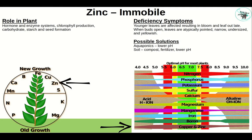Last but not least, zinc is an immobile micronutrient used in hormones, enzyme systems, chlorophyll production, carbohydrates, starch, and seed formation. Because it's immobile, you'll see it in the new growth first. Young leaves are affected, resulting in late bloom and leaf out. When buds open, leaves are atypically pointed, narrow, undersized, and yellowish. In aquaponics: lower the pH. In soil: compost, fertilizer, lower the pH. Just like copper, zinc availability drops drastically as pH rises, and also drops off quite a bit below pH 5.